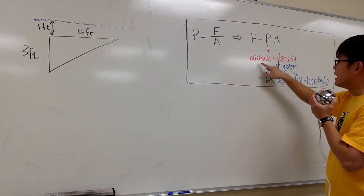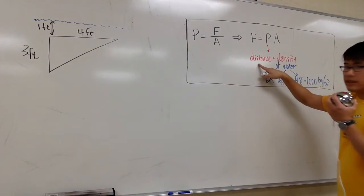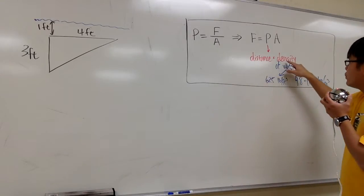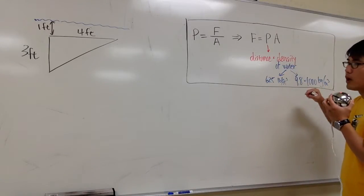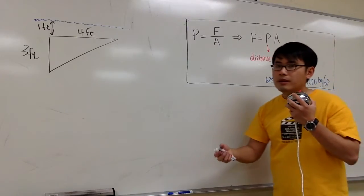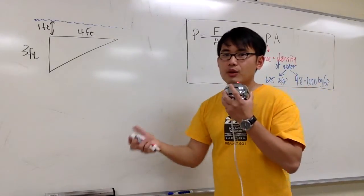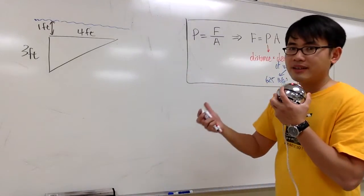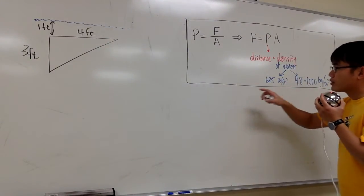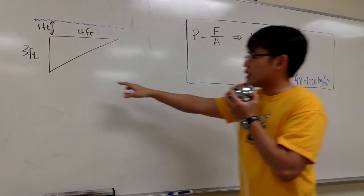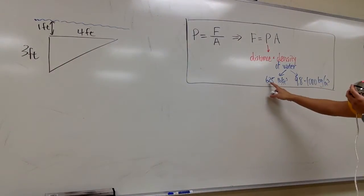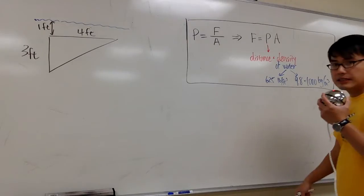For the pressure, as I said, it depends on distance — how far down we are underneath the water. We also have to multiply by the density of the water. In this case we're using water, but later on if you're talking about gasoline or some other liquid, you may have to multiply by different constants. It also depends on the units we're using. Here we're using feet, so we are going to use 62.5.